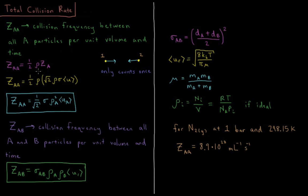Let's think about where we got these pieces from. The total collision frequency depends on the number of particles — the more dense those particles are, the more collisions we're going to have. The collisions that an individual particle has are determined by ZA, its individual collision frequency. So we have the individual collision frequency times the total number of particles per unit volume, the density, and the collision frequency is already per unit time.